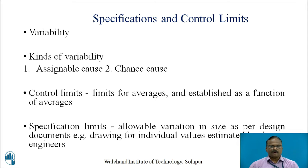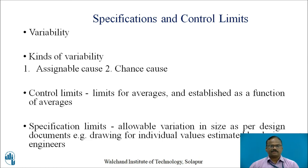In order to understand specifications and control limits, we must know what a control limit is. Control limit is nothing but limits for averages, established as a function of averages. Control charts are generally built in order to establish control limits for different charts. From a lot, certain samples are taken and the dimensions of each sample are measured, and the variation in dimension is observed in order to plot a control limit for that particular process.